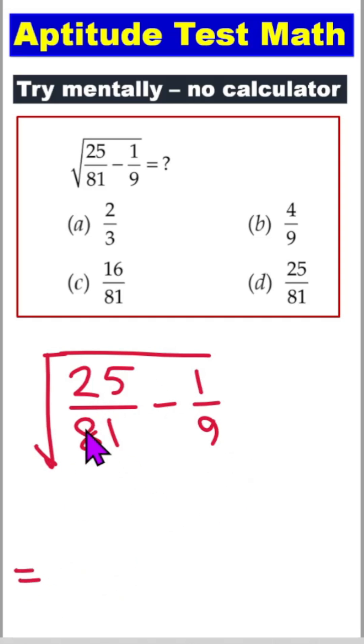So first, these two fractions, we are simplified by simple LCM. Here is 81.